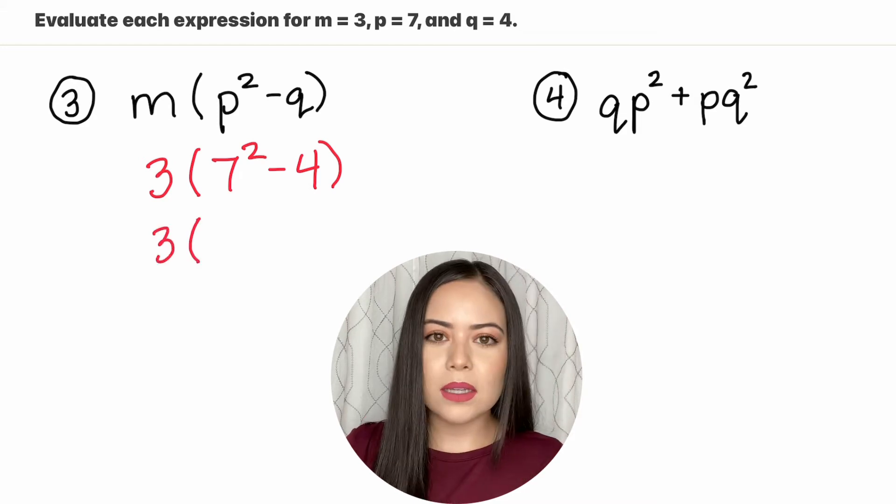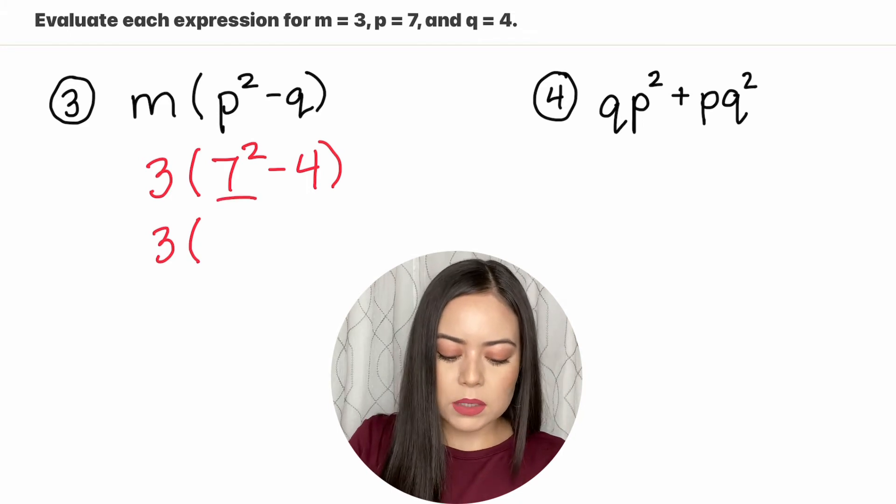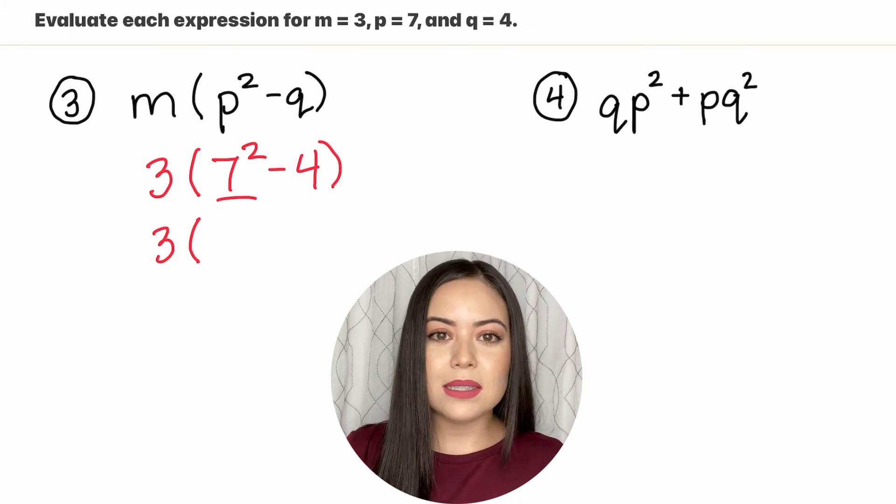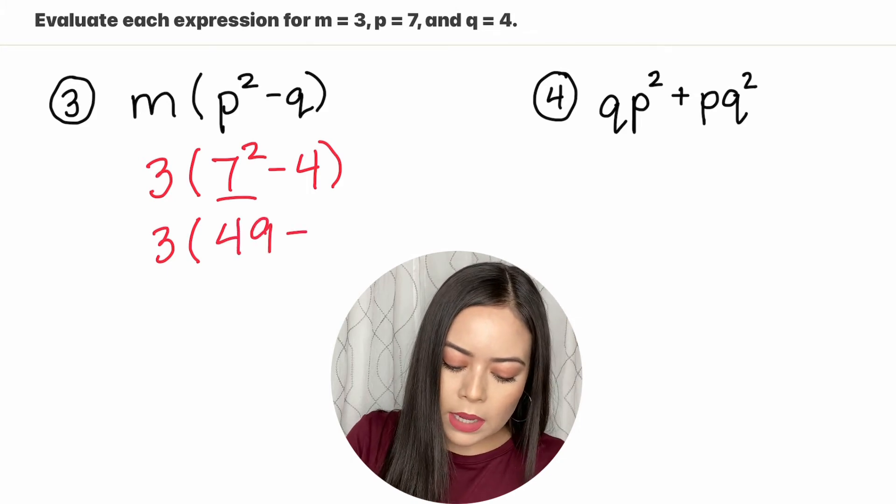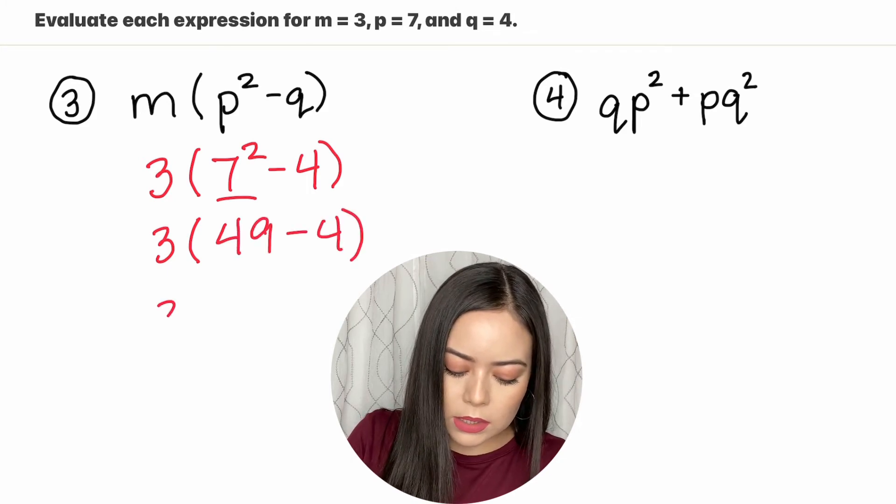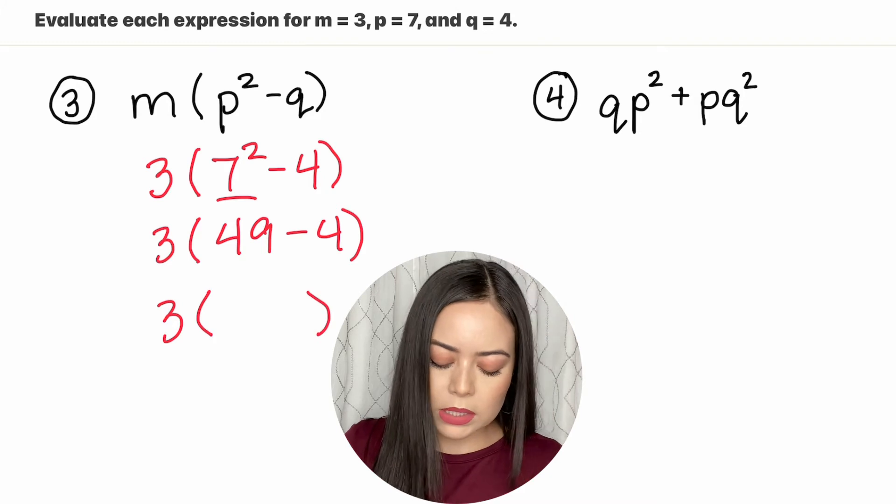So we're going to simplify what's inside the parentheses starting with the exponent. 7 squared is 7 times 7 which is 49. 49 minus 4. Let's continue simplifying what's inside the parentheses.